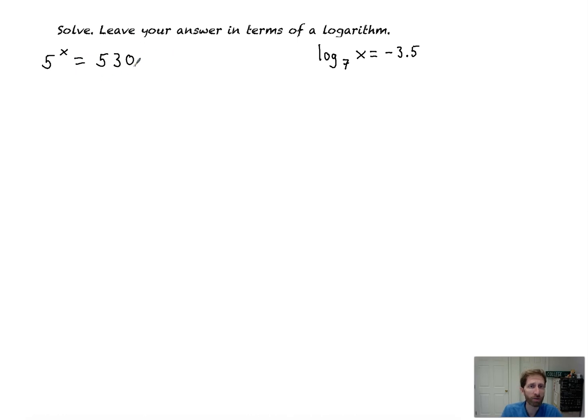So how do we solve these? We're going to leave our answers in logarithmic form. To solve these, very simply, we take the log base of whatever you see on that side. So I'm going to take log base 5 of both sides. That undoes 5 to the whatever. And so log base 5 of 5, they completely undo each other. We're left with x equals log 5 of 538. And that would be your answer. That would be it.